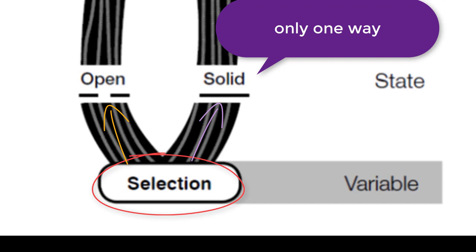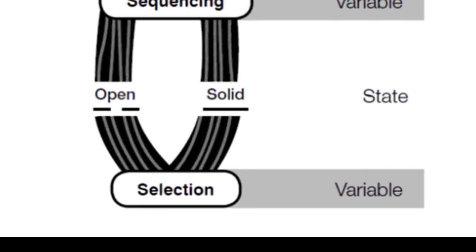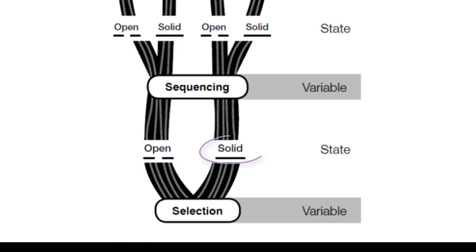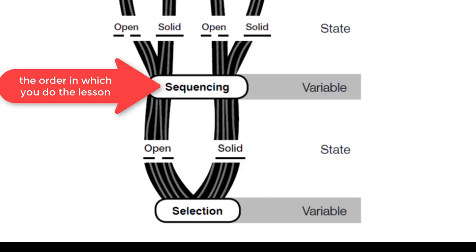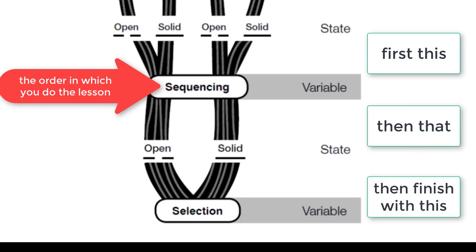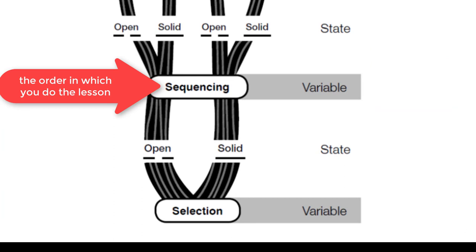Once that's decided upon, we move on to the second variable, which is Sequencing. You can see there are paths running through from Selection to Sequencing. A teacher that chooses an open Selection process, when they move on to Sequencing, can choose open and solid states again. And just so with a teacher who chooses a solid state — that teacher can also, when getting to Sequencing, choose to be either open or solid. By Sequencing, we really mean the order in which the knowledge that was chosen gets done: first you do this, then you do that, then you do this activity, then that activity, then an assessment.